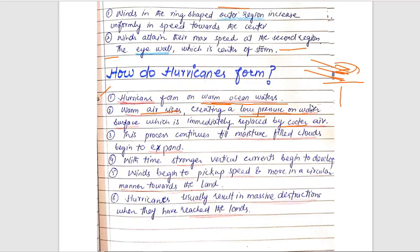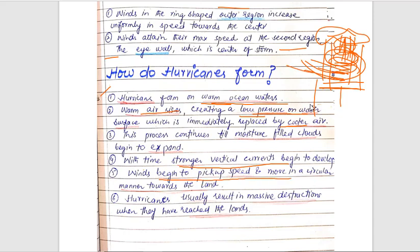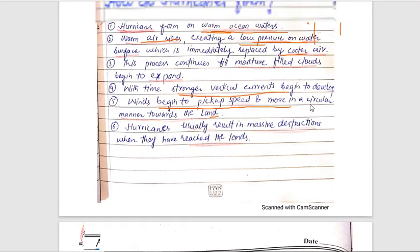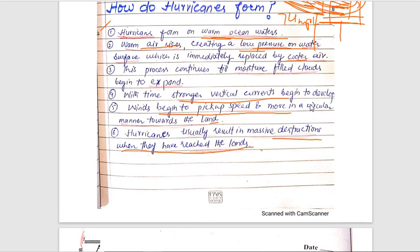It goes into the clouds and comes down as cool air, starting to swirl. With time, stronger vertical currents develop, clouds begin to form, winds begin to pick up speed in a circular manner toward the land. Hurricanes usually result in massive destruction when they reach land.